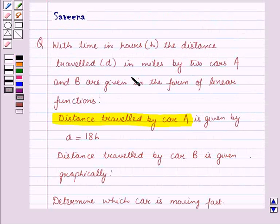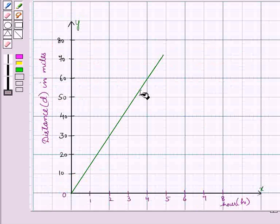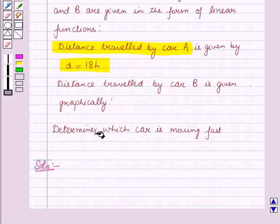Now let us start with the solution. In this question we are given the relation between time in hours and distance travelled in miles of the two cars in different representations. For car A the relation is represented algebraically and for car B the relation is given graphically, and we have to determine which car is moving fast.